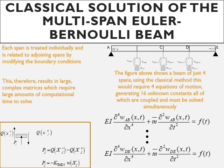Considering the beam shown in the figure here, the classical solution would require four coupled equations of motion in which there would be 16 unknown constants which must be simultaneously solved.